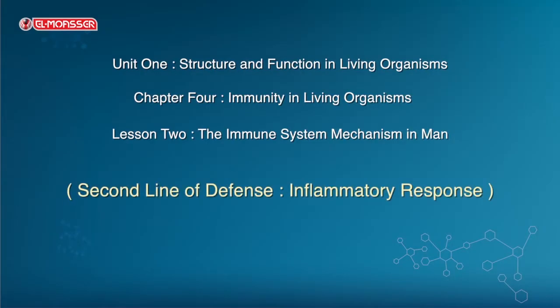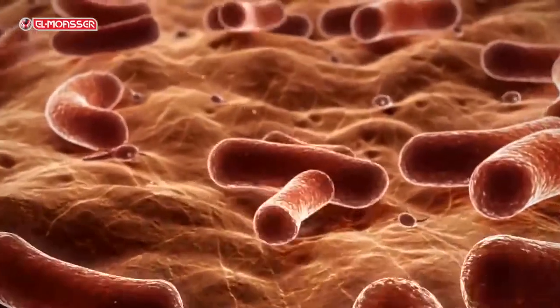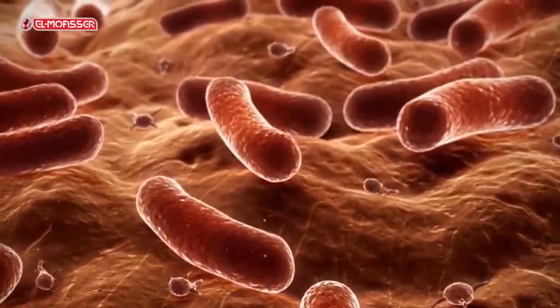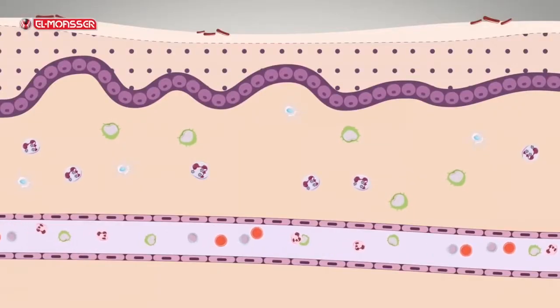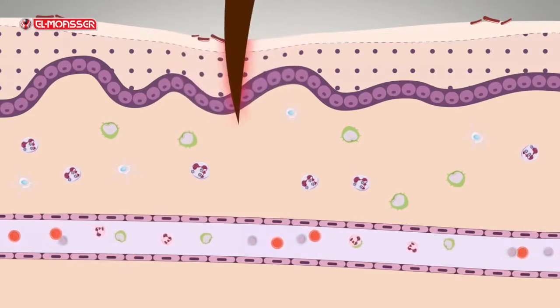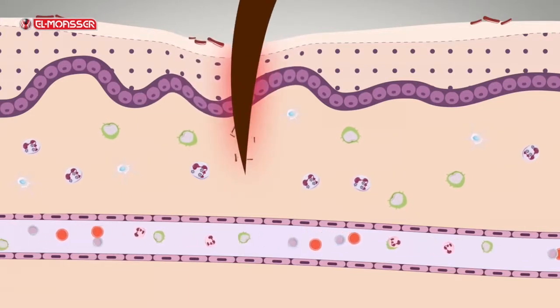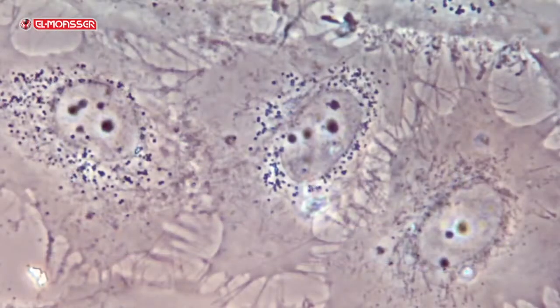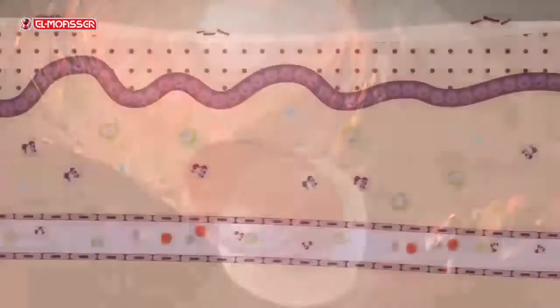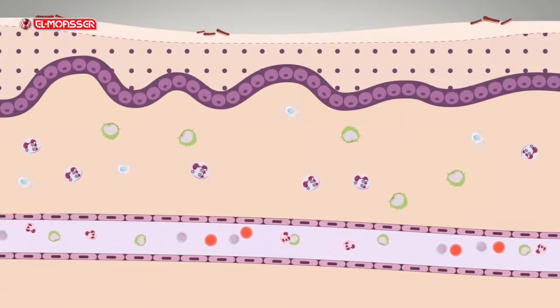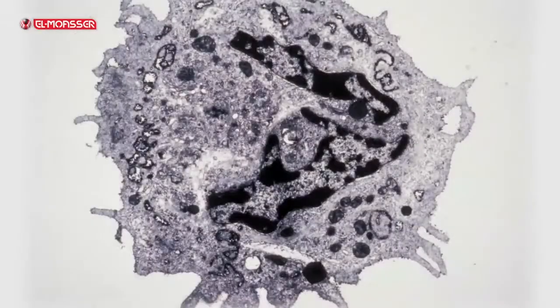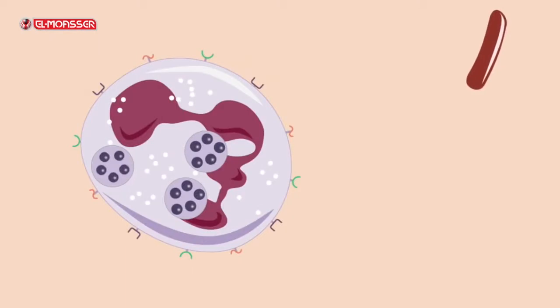Second line of defense: inflammatory response. On the human skin surface, there are millions of microbes such as bacteria and viruses. When the skin is exposed to an injury, this leads to the entry of microbes into the body tissues, where some cells of the immune system such as mast cells and basophils move towards the area of injury.